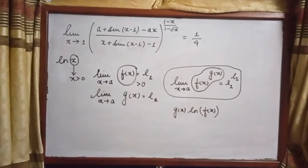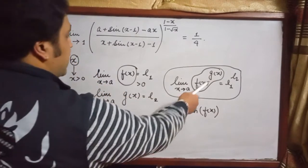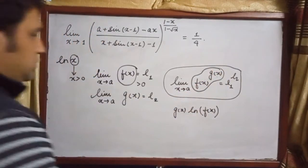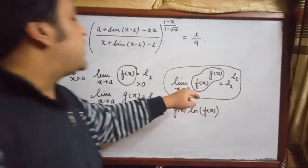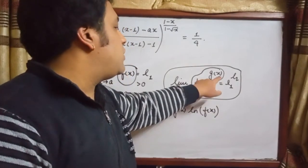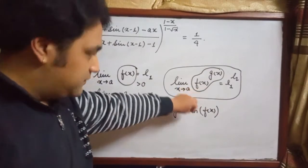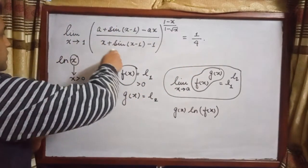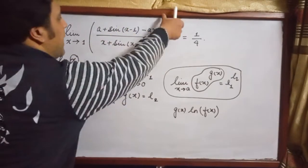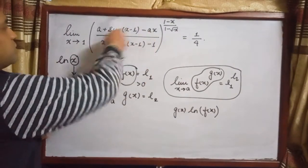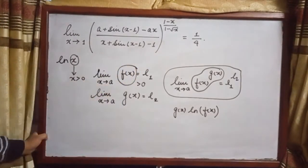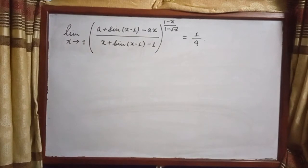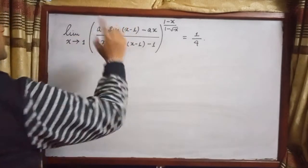So if you get a limit of the form f(x)^g(x), you use the result that it equals L1^L2, provided f(x) is positive. In these kinds of questions we need to remember that whatever function is being raised to some power needs to be positive, so we work under that assumption.